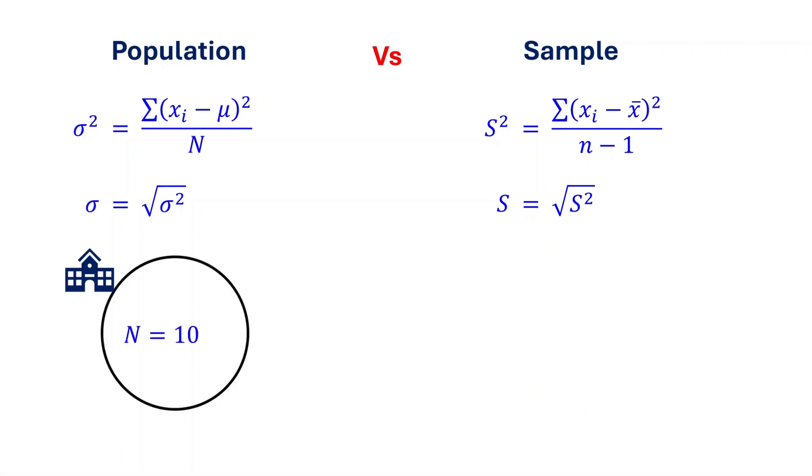For example, imagine your school has 1,000 students, and you want to calculate the variance and standard deviation of their heights. If you measure all 1,000 students, you are working with the entire population. But let's be real, measuring 1,000 students' heights might take forever.